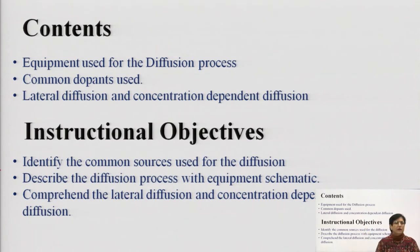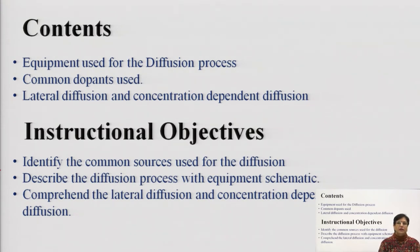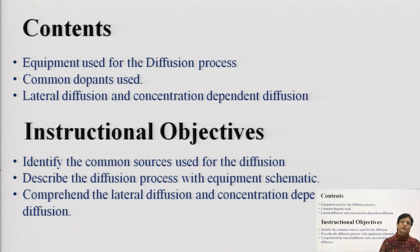The contents listed here include: we are going to study the equipment, the common dopants which are being used, because you should be aware of the typical dopants used for device fabrication. Lastly, we are going to see other parameters — lateral diffusion and concentration-dependent diffusion — along with normal diffusion and what are the other consequences of the diffusion profile.